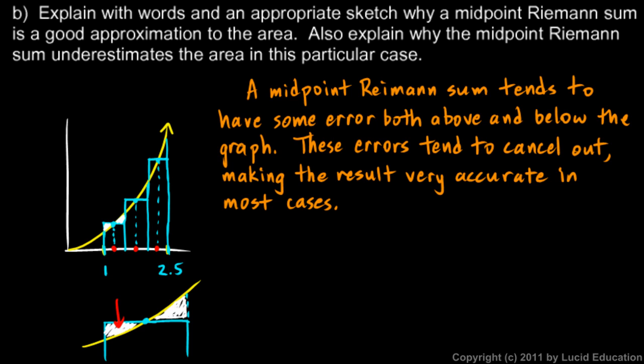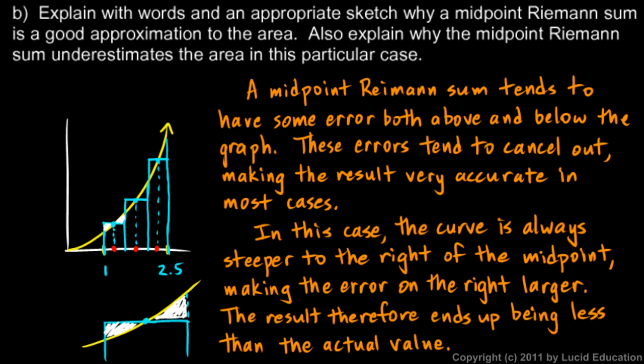So since this one is smaller, you can see that the area under the graph, which includes this small region, but not this slightly larger one, ends up underestimating the area. So you should have a written explanation for that also. And my written explanation was this.